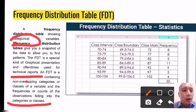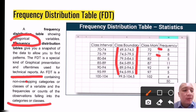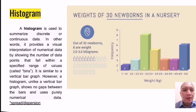In a frequency distribution table, you have upper and lower boundaries. To get the frequency, you add the class mark — for example, 72 + 5 is 77, 77 + 5 is 82, 82 + 5 is 87, and so on — giving you the full distribution.